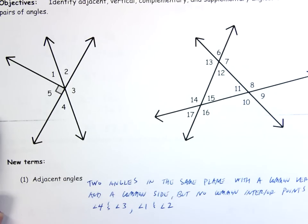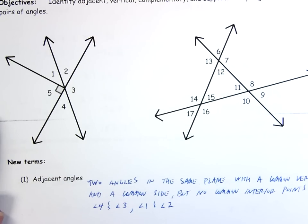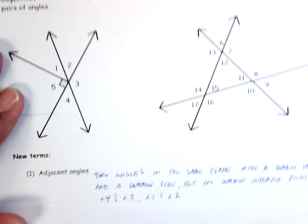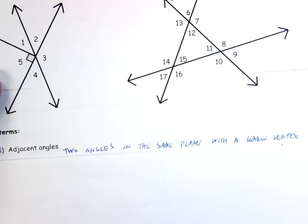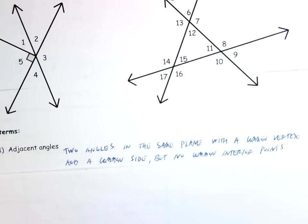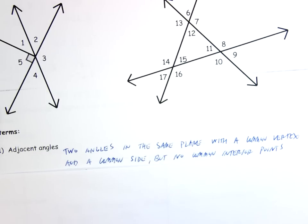Some more vocab for us to know — these are all pretty important words. Adjacent angles are two angles in the same plane with a common vertex and a common side, but no common interior points. It's kind of a long definition, but it's pretty easy to see what we're talking about.